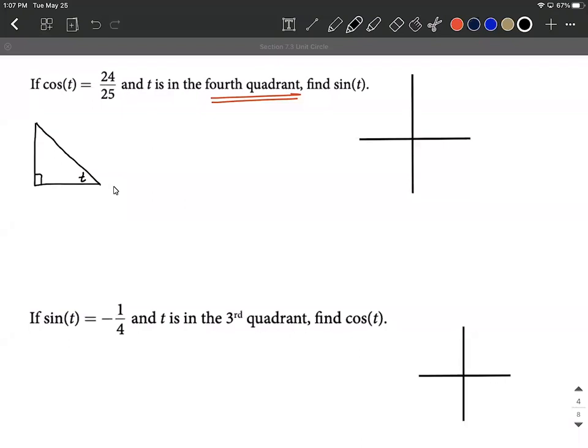So if I know that cosine of t is 24 over 25, I can start labeling sides on this triangle. I also know that from SOHCAHTOA, cosine is going to be adjacent over hypotenuse. So I'm going to go ahead and say 24 goes on the adjacent side, and then 25 is going to be the hypotenuse. So that's going to be across from the right angle.